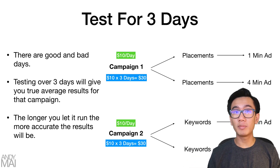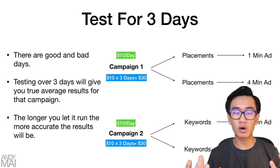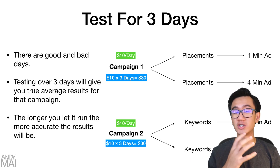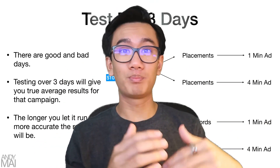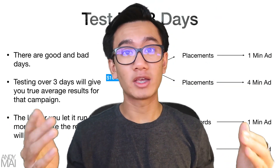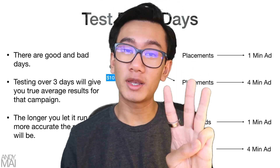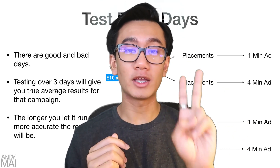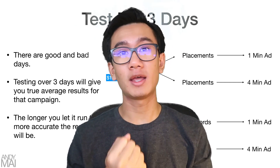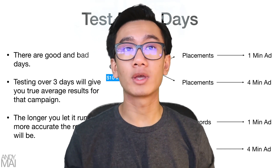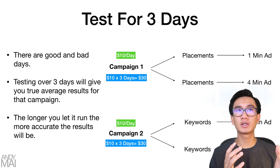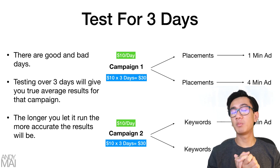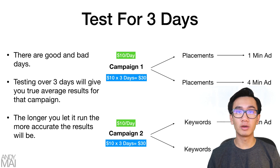Running for three days gives you a true average result and tells you if it's a winner or not. Without this, you might kill a winning campaign based on one bad day, or you might scale a campaign that just had one good day — going from $10 to $50 a day and watching it crash. I personally let my campaigns run four to five days, but if you're on a budget, three days is fine.